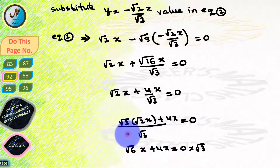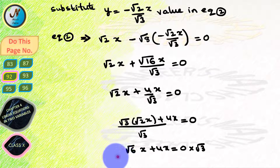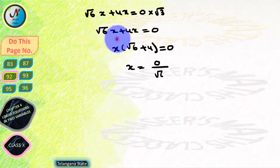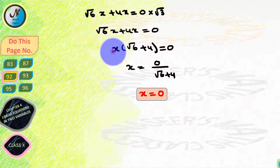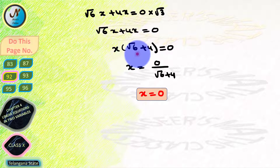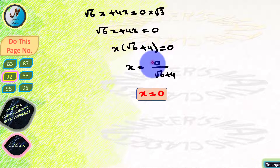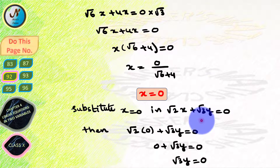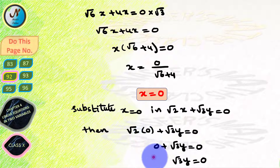Since root 16 equals 4, the equation becomes root 3 x plus 4x by root 3 equals 0. Taking root 3 as LCM: (root 3 into root 2 x plus 4x) by root 3 equals 0. Transposing root 3 to RHS: root 6 x plus 4x equals 0. Taking x common: x into (root 6 plus 4) equals 0. Transposing (root 6 plus 4) to the denominator: x equals 0 by (root 6 plus 4). Since 0 divided by anything is 0, x equals 0.